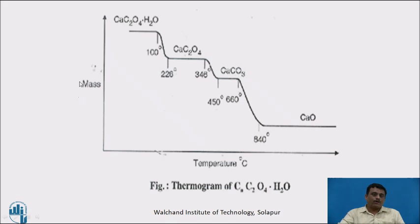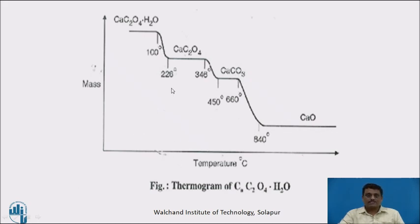The recorder gives a graph between mass and temperature — this is a particular example of calcium oxalate. Initially, when temperature is very low, the mass is high. As temperature increases, the mass decreases, because at specific temperature stages, some molecules get evaporated, degraded, or decomposed. This pattern is called a thermogram — a plot of the mass of a sample with respect to heating values.